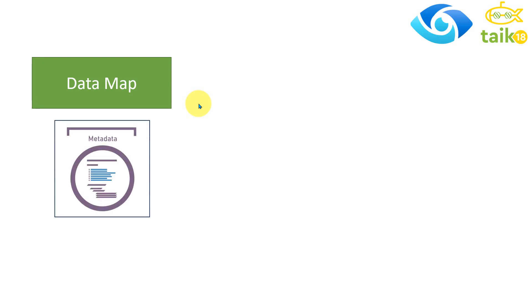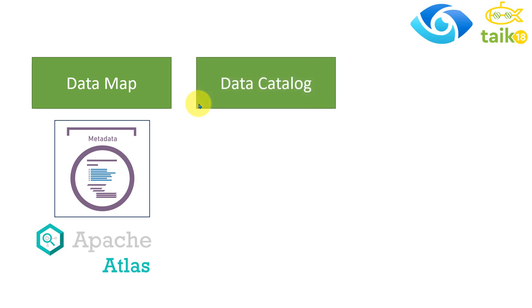There are three main areas of Microsoft Purview. The first is the data map, which gives information about our data and its metadata. It is not actually storing the data itself — it is storing only the metadata information about our data sources. If you want to access it programmatically, you can do so through Apache Atlas API connections. It also automatically creates a data catalog, which is like a glossary, so that end users or anybody can easily search for the data source they need and see its availability.